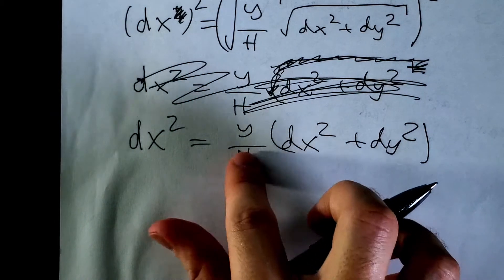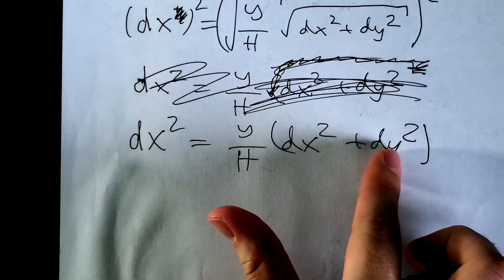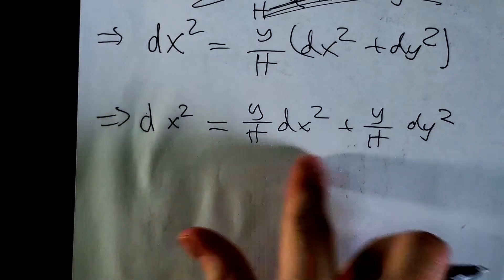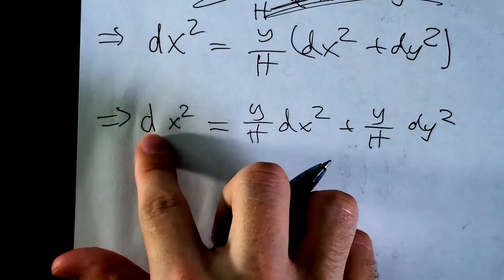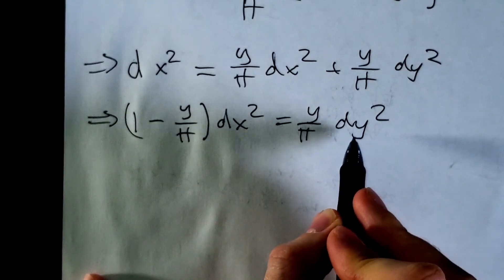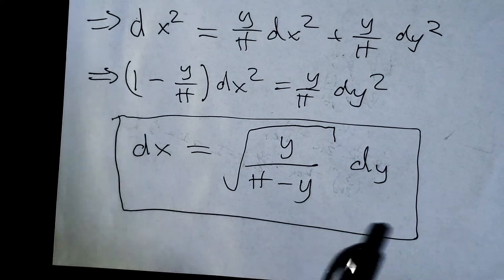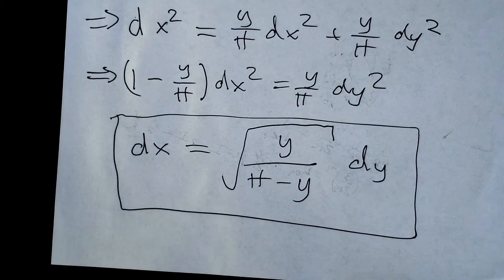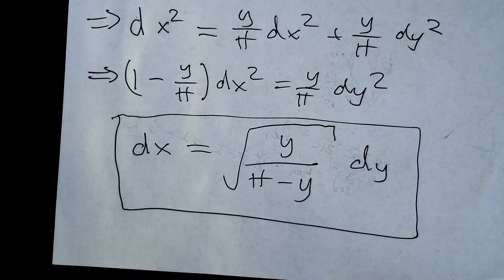Distributing Y/H to DX² and DY², then collecting like terms and taking the square root, we arrive at a differential equation. This is actually the differential equation of the cycloid — the same one you get from calculus of variations, just with H instead of 2R. Now I want to go further and find the parametric equations for X and Y.